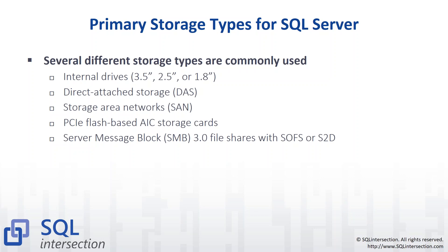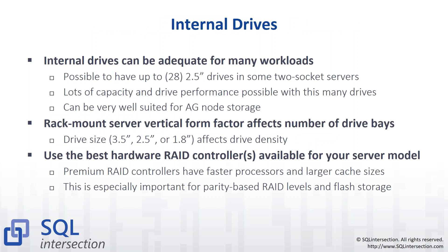With internal drives, especially flash, you can have up to 28 two-and-a-half-inch drives in a typical two-socket server, giving you a lot of capacity that will support many workloads. This is very well suited for availability group node storage — you don't have to use shared storage like a SAN. Try to favor two-and-a-half-inch drives over three-and-a-half-inch because they perform better in most cases, use less power, and let you fit more drives in the same form factor. It's really important to spring for the very best hardware RAID controller you can get — faster processors and larger cache make a big difference, especially for parity-based RAID levels.